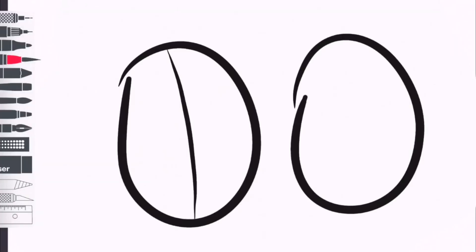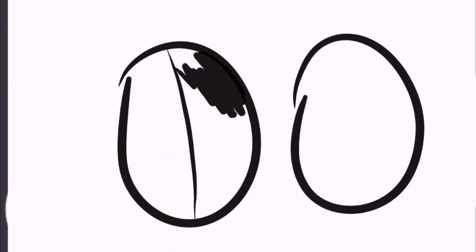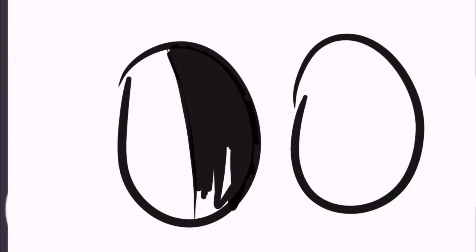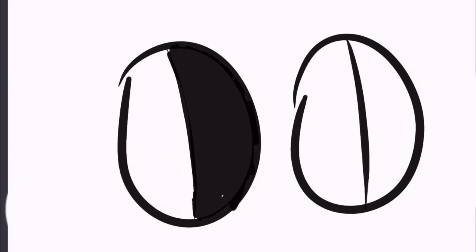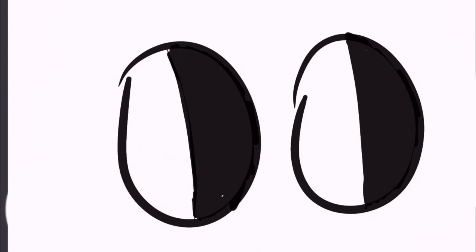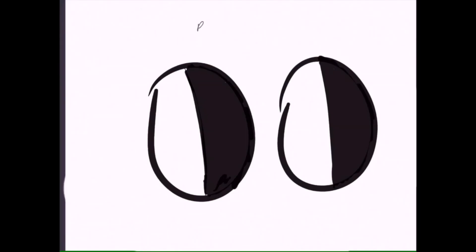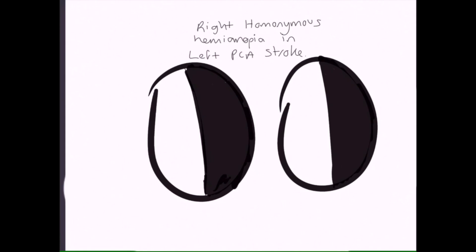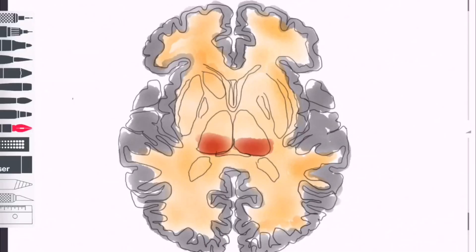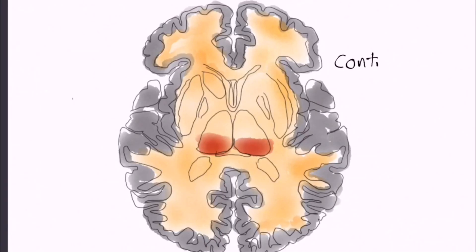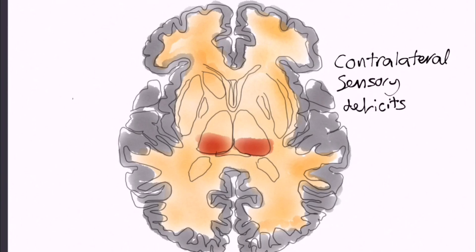One of the most common symptoms of a PCA stroke is a visual field defect — contralateral homonymous hemianopia. This image may depict the pattern of visual loss in a patient who has suffered a PCA stroke. If the thalamus is involved, the patient may have contralateral sensory deficits, which occurs in up to a half of patients.